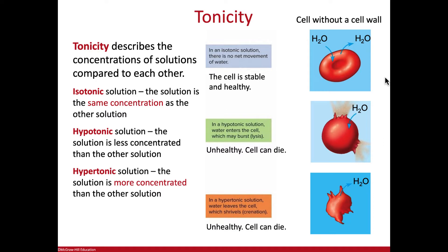When we have solutions that we call isotonic — so two isotonic solutions — "iso" means same, like isosceles triangle or isometric exercises. This means both solutions have the same concentration of solutes. With a cell without a cell wall, like a red blood cell for example, in an isotonic solution the water goes in and out at equal rates, meaning the cell is healthy and stable. So this is an ideal condition for cells without a cell wall, like animal cells.